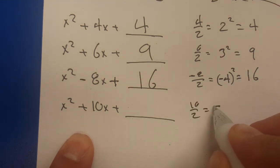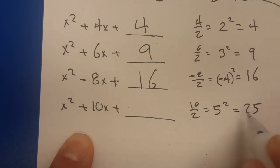Next one, 10 divided by 2 equals 5, squared, 25. There you go. That's about it.